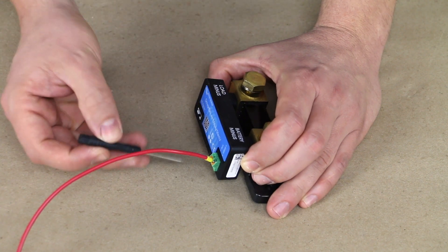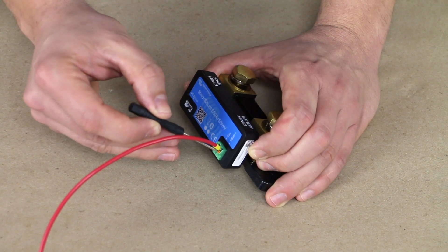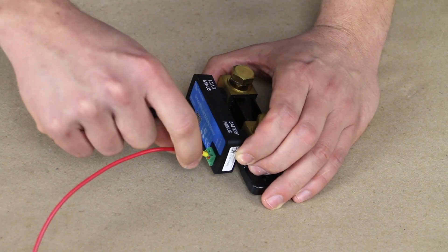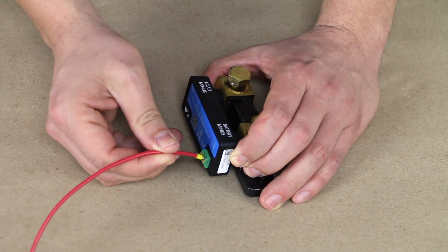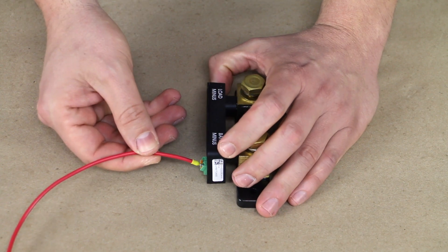And you would just use a jeweler screwdriver and depress the orange trigger if you wanted to pull that out. But for now, we have a great mechanical connection and then also a great electrical connection as well.